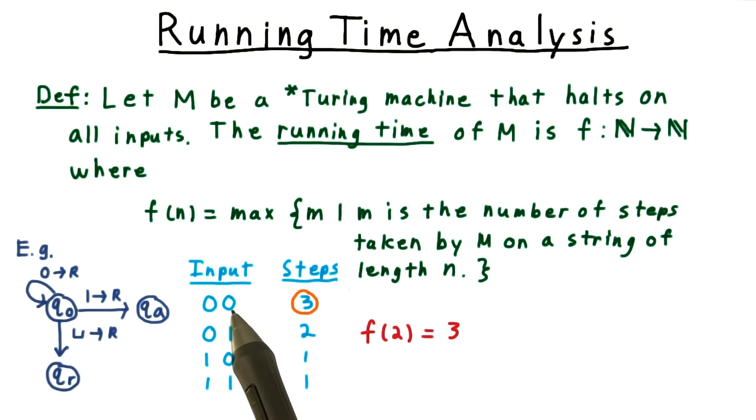We had to read the 0, the 0, and the blank after it. And so that then is the overall running time, f(2) is equal to 3.